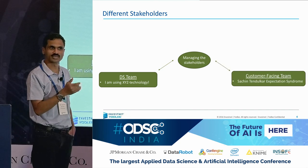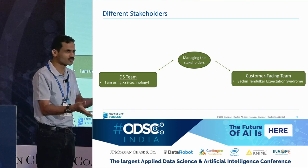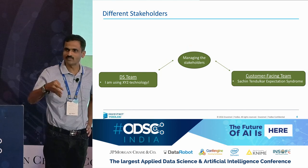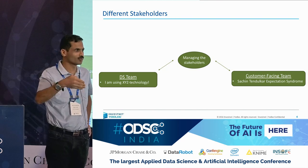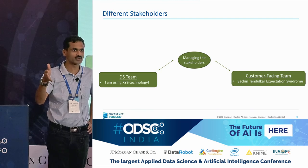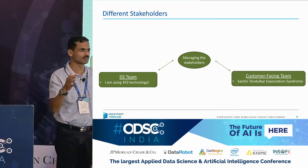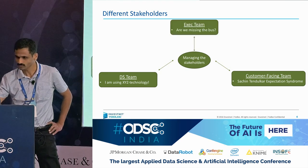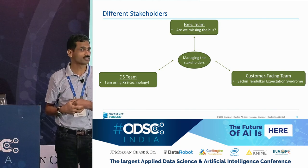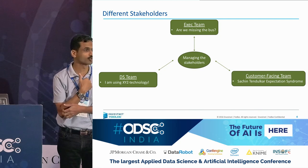The other stakeholder is the customer-facing teams. Their first instinct is what I call — I totally came up with this term — Sachin Tendulkar Expectation Syndrome. What that means is every time Sachin comes to bat, the first ball has to be a six and he should not get out till he hits a century. So they have this syndrome which says no matter what the solution is, it has to be 100% accurate. Anything less than 100% is not acceptable at all. The third stakeholder is the executive team — they always worry, are we missing the bus? There's a new cool technology that has come out, are we using it?